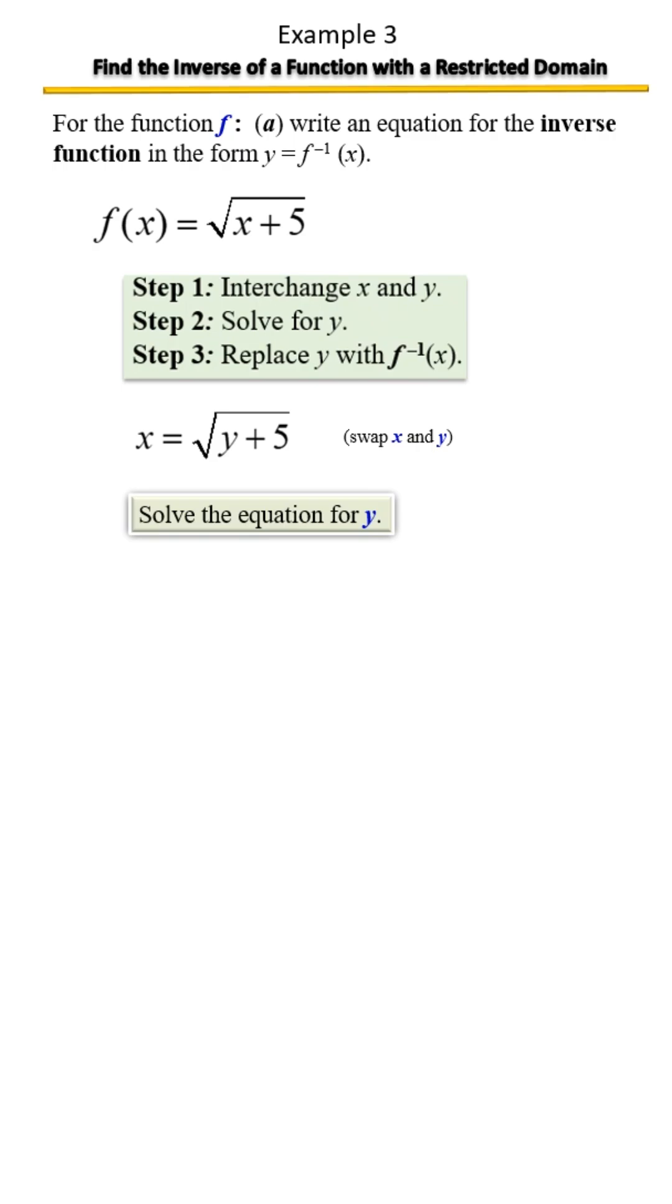Now, you know what the rules of equations say: whatever you do to one side, you must do to the other. So we need to square both sides. That process is going to allow us to bring down y plus 5 all by itself. The last step to solving for y is to subtract 5, and here we have solved for y.